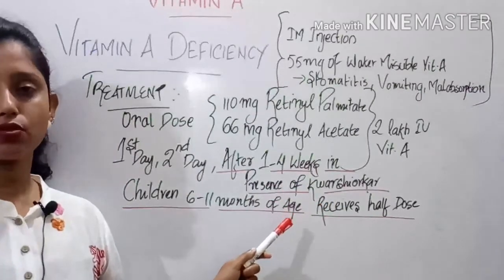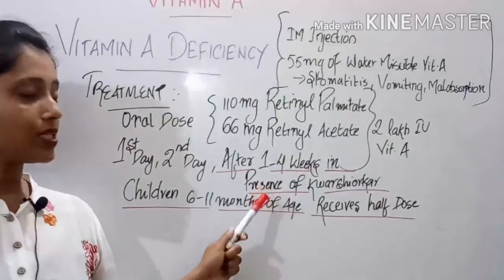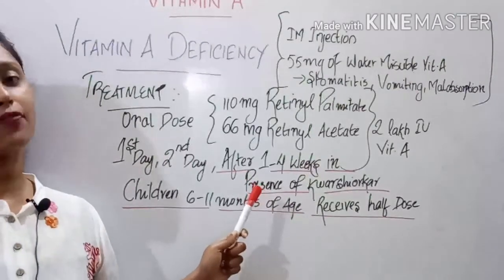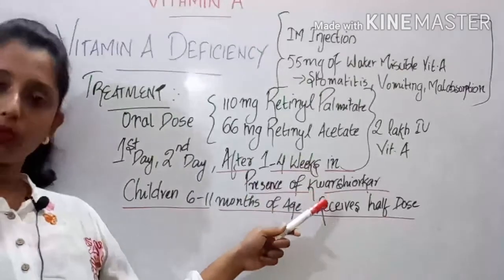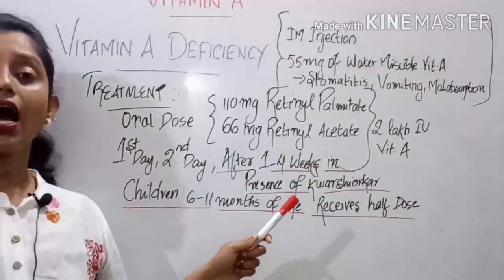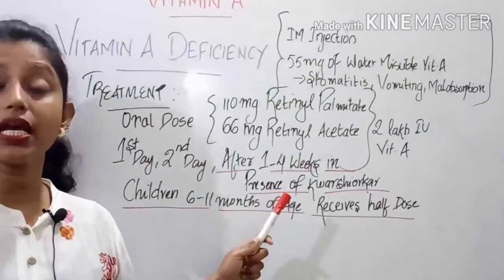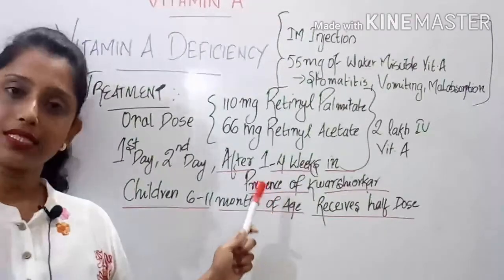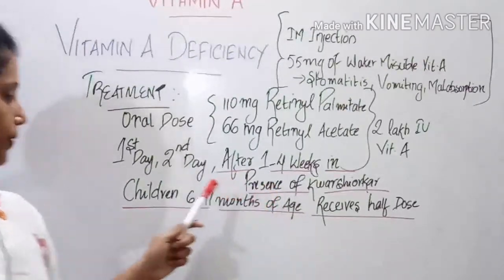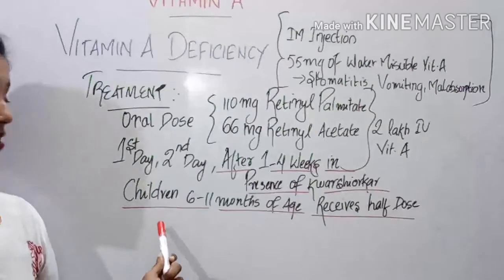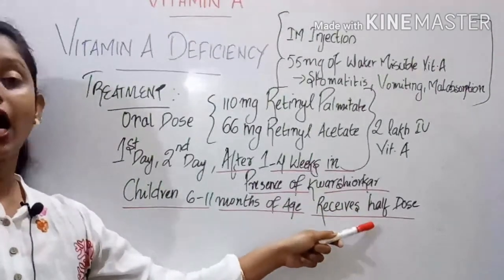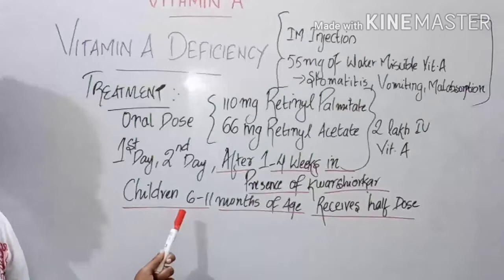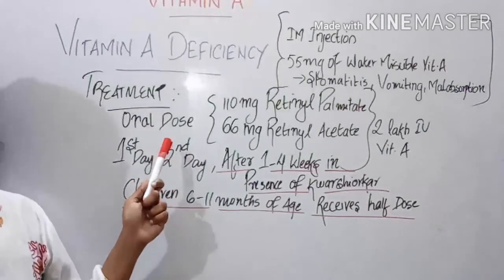If the child has kwashiorkor — a protein energy malnutrition — the dose can be repeated after one to four weeks. For prevention, the dose is repeated every four to six months. If the child is six to eleven months of age, only half the dose is required.